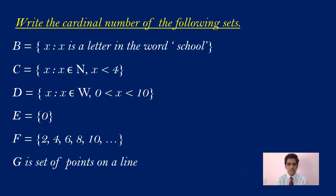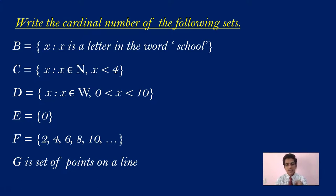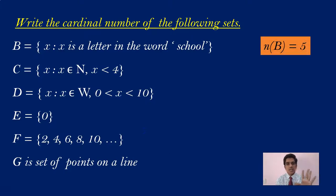Write the cardinal number of the following sets. Look at the first one: B = {x | x is a letter in the word SCHOOL}. The letters you have to write are S, C, H, O, and L — since we don't repeat elements. So the number of elements in B is actually 5, and we write n(B) = 5.